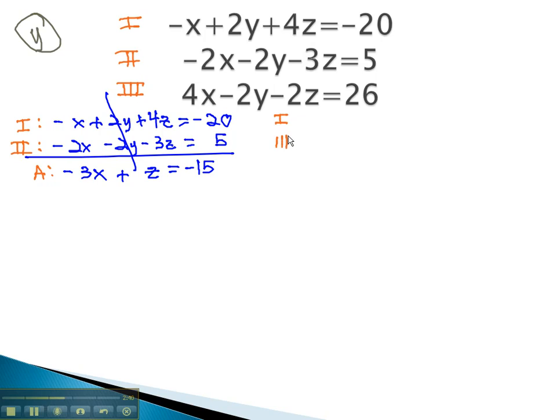Using equations 1 and 3, equation 1 is negative x plus 2y plus 4z equals negative 20. Equation 3, 4x minus 2y minus 2z equals 26. By combining them together, y eliminates a second time, giving us 3x plus 2z equals 6.